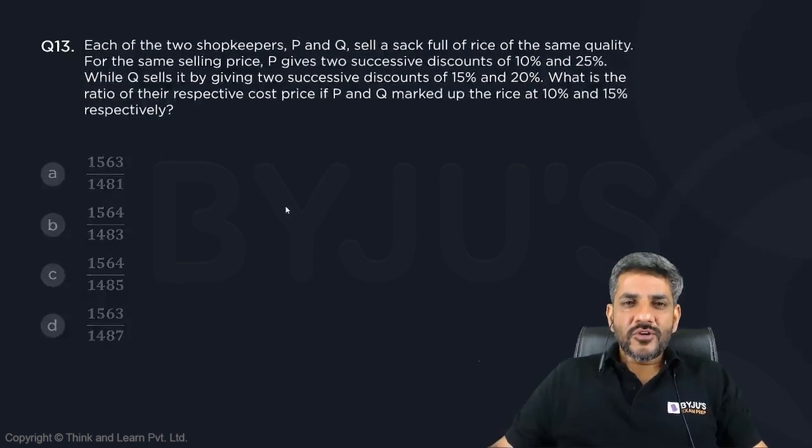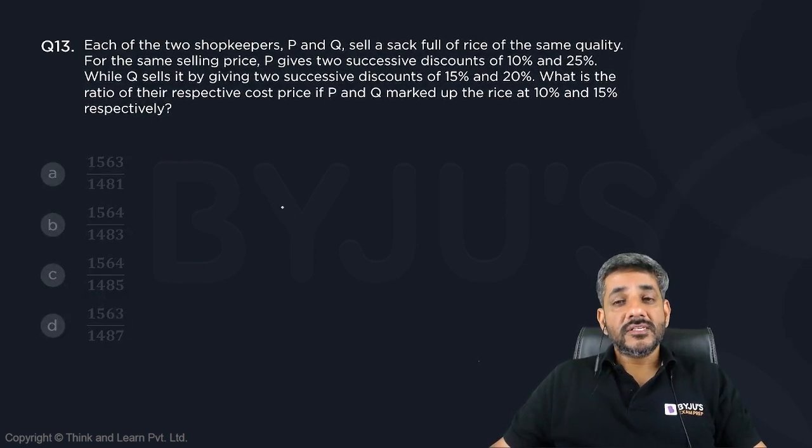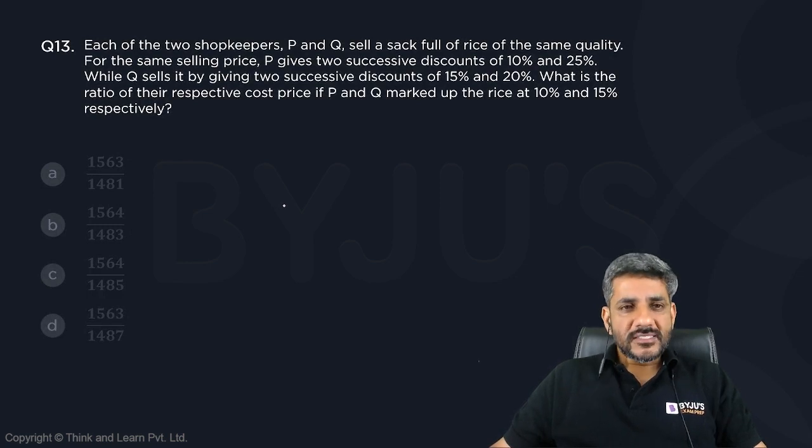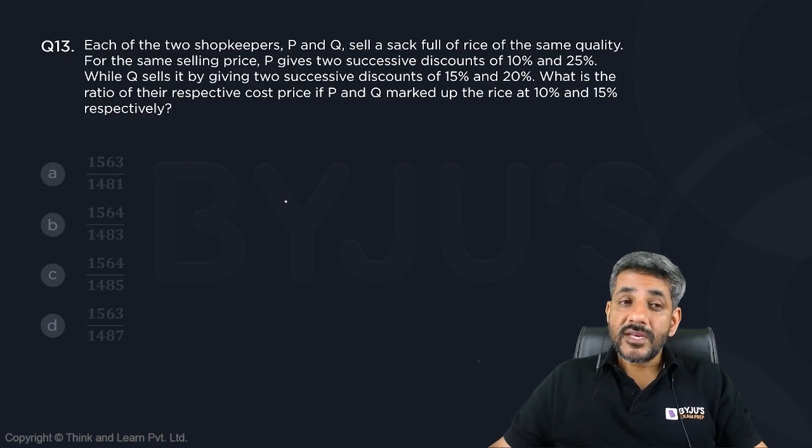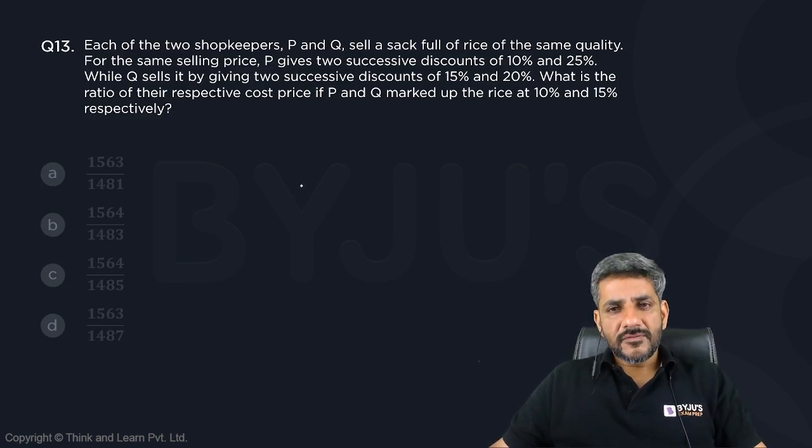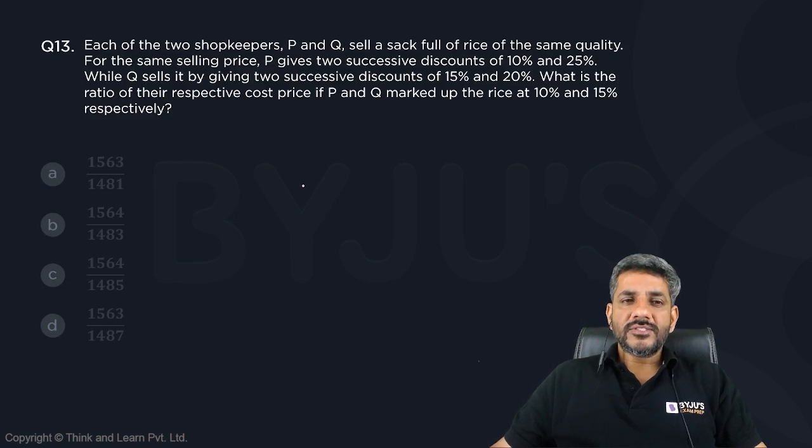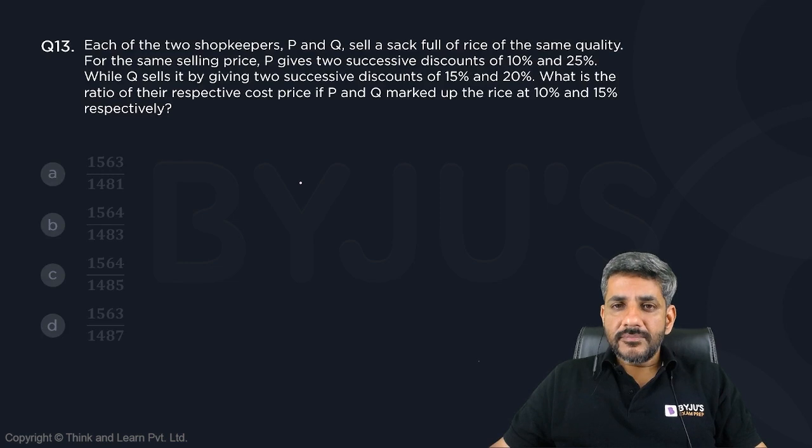Each of the two shopkeepers P and Q sell a sack full of rice of the same quality. For the same selling price, P gives two successive discounts of 10% and 25%, while Q sells it by giving two successive discounts of 15% and 20%. What is the ratio of their respective cost price if P and Q marked up the rice at 10% and 15% respectively?